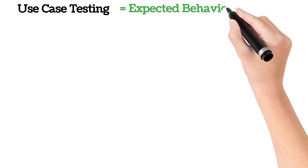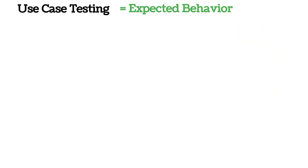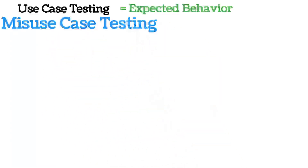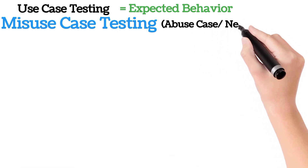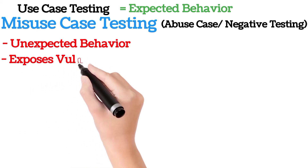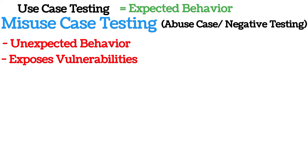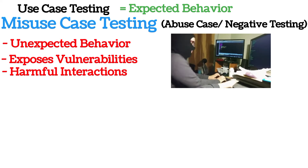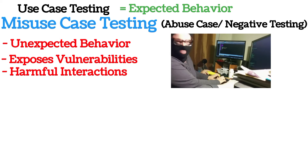Use case testing tests the expected behavior or functionality of a system, but it is not very useful for testing the security of a system. Misuse case testing — also called abuse case testing or negative testing — tests the unexpected behavior of a system against any misuse, exposing the vulnerability of a system against any unexpected or harmful interactions with a threat actor.